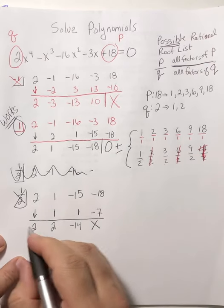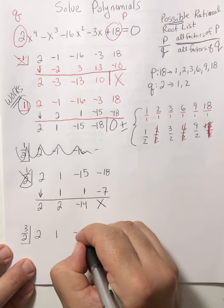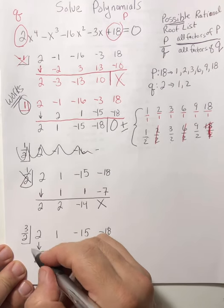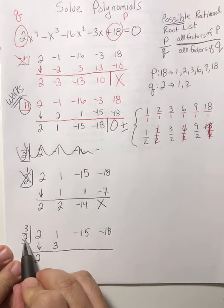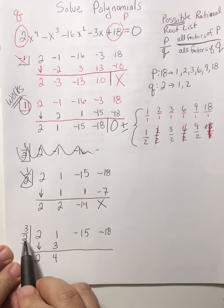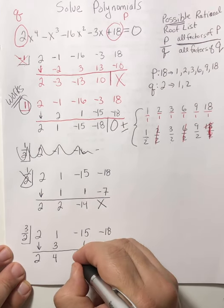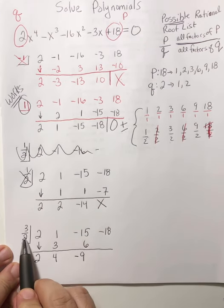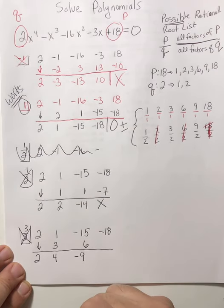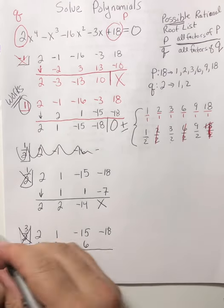I want to try 3 over 2 now. 3 over 2 times 2 is 3 — 2 goes into 2 once, times 3 is 3. Then I add. 2 goes into 4 twice; 2 times 3 is 6. Then we add here — that's negative 9. Does 2 go into 9 evenly? No, we can't take half of 9 nicely. So 3 halves doesn't work. Here I could keep working because I could keep taking halves, but 2 does not go into 9 evenly, so we're done with 3 halves.